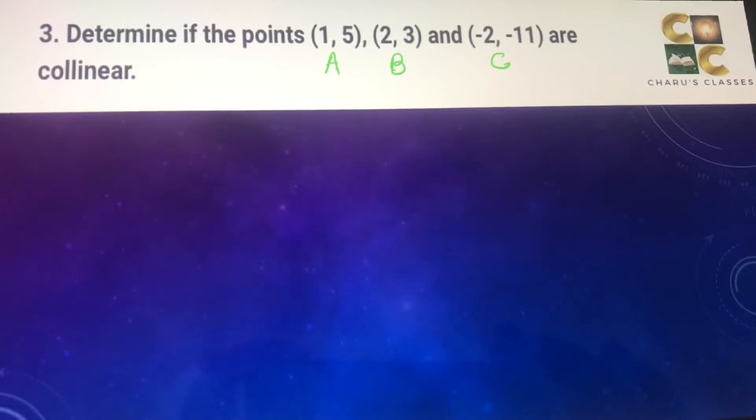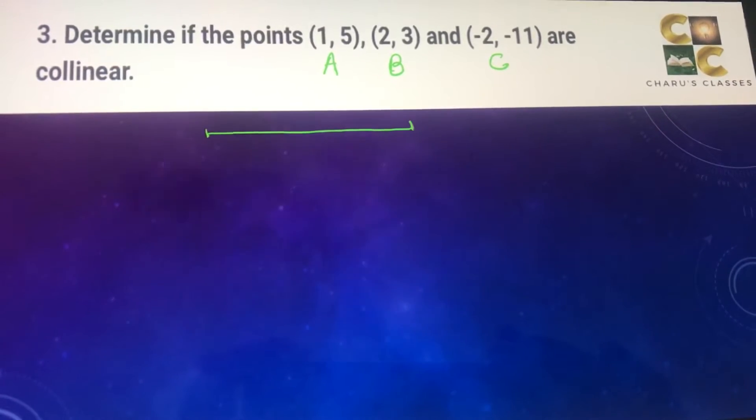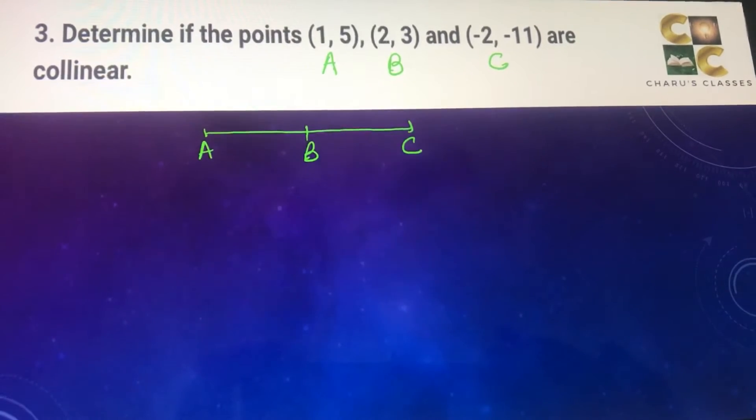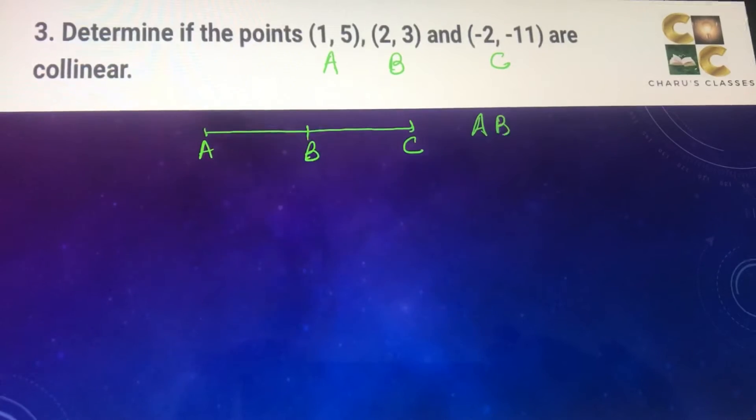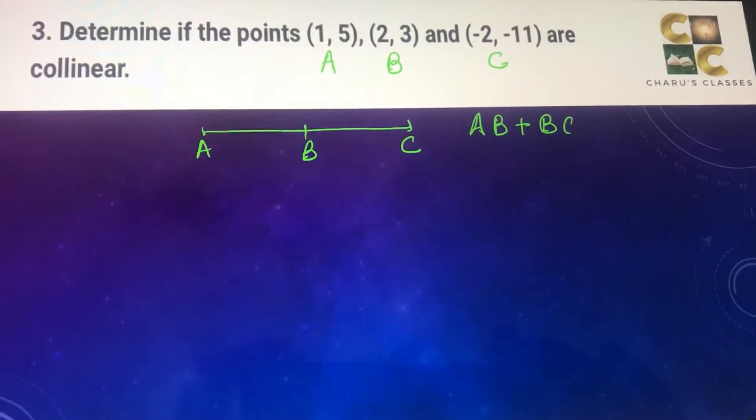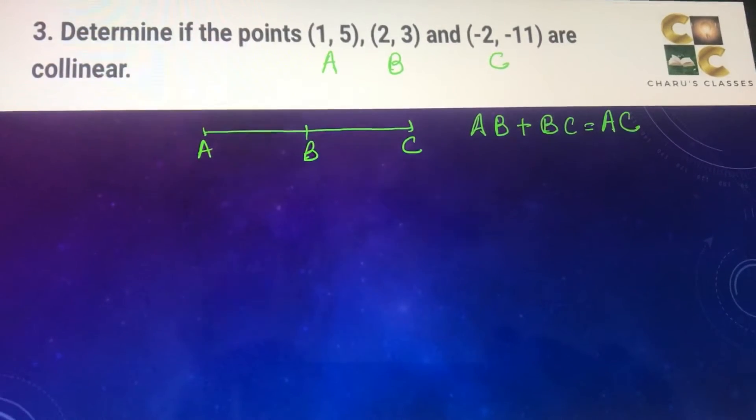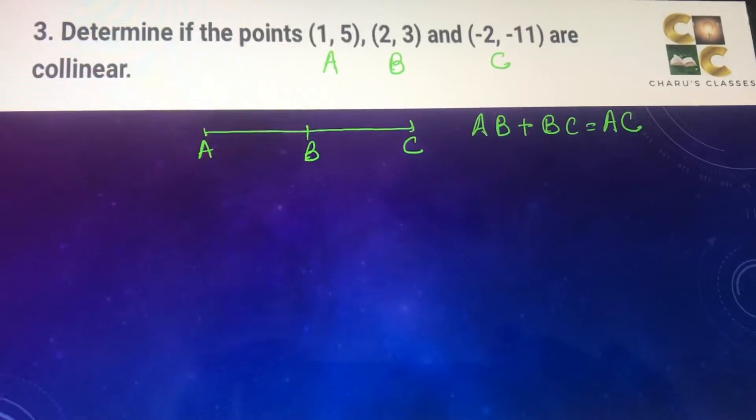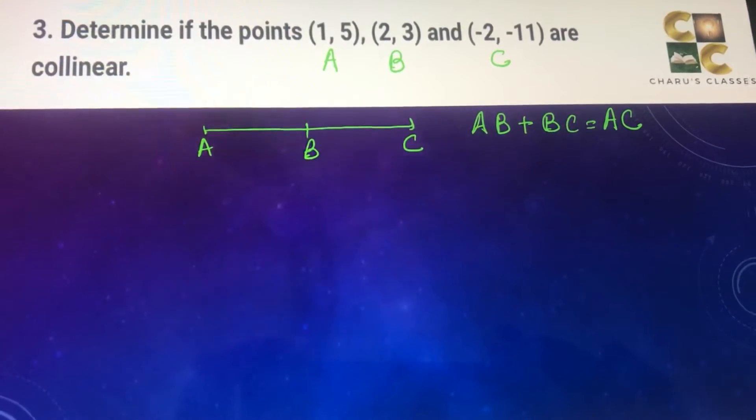Three points are said to be collinear when they come on the same line. So if we are using the distance formula and we can prove that AB plus BC is equal to AC, then we can prove that these three points are collinear. So we are going to find these values.